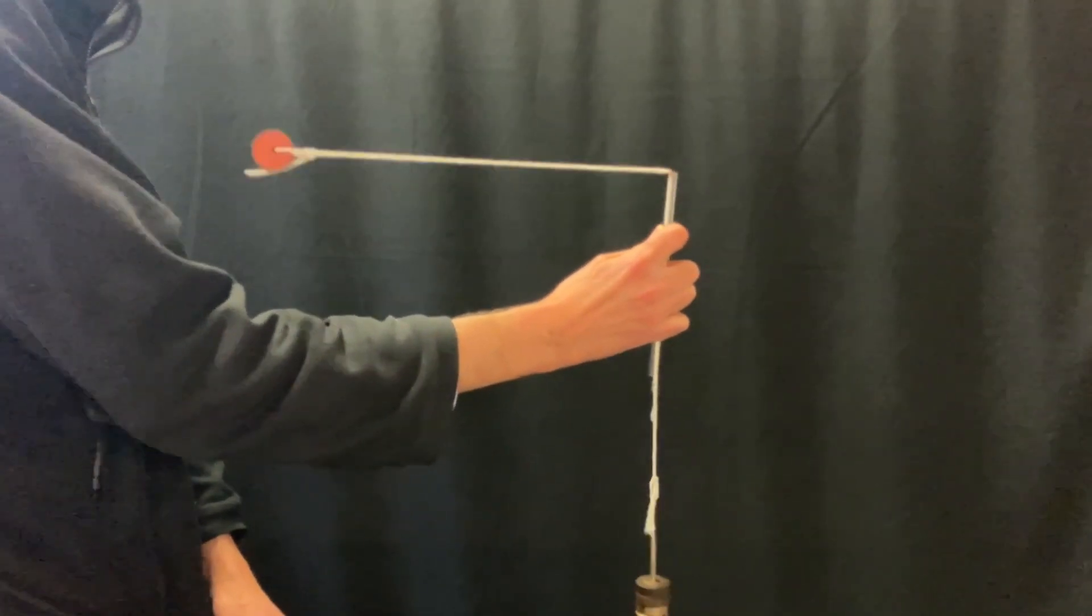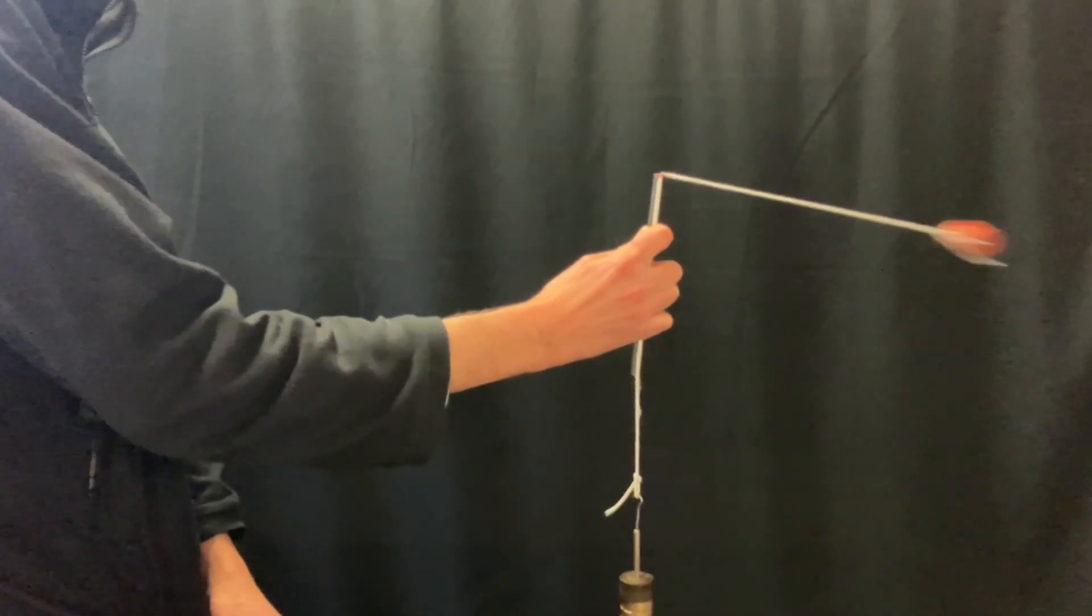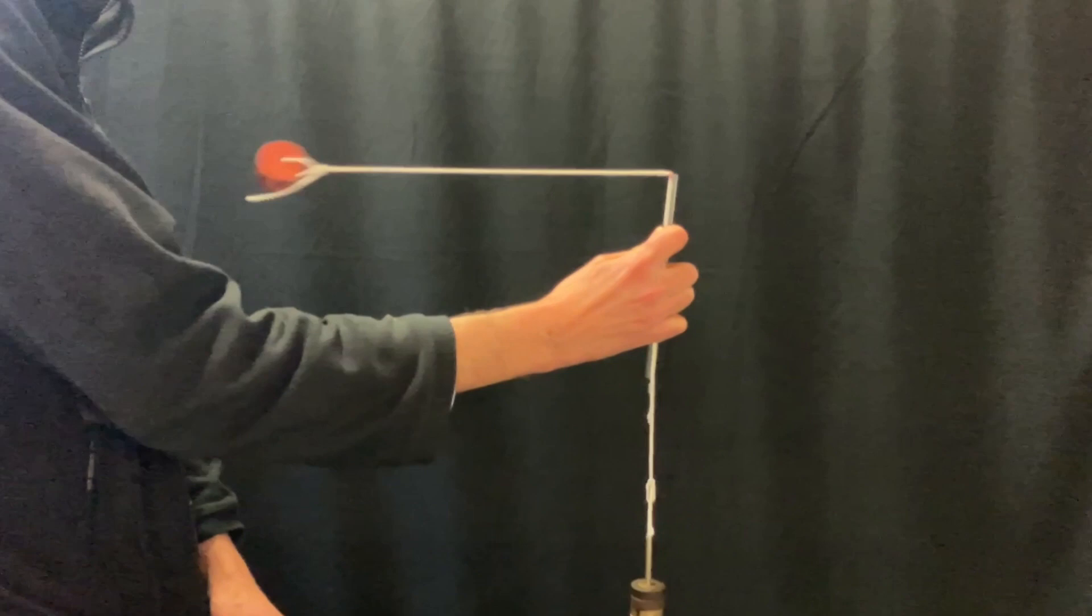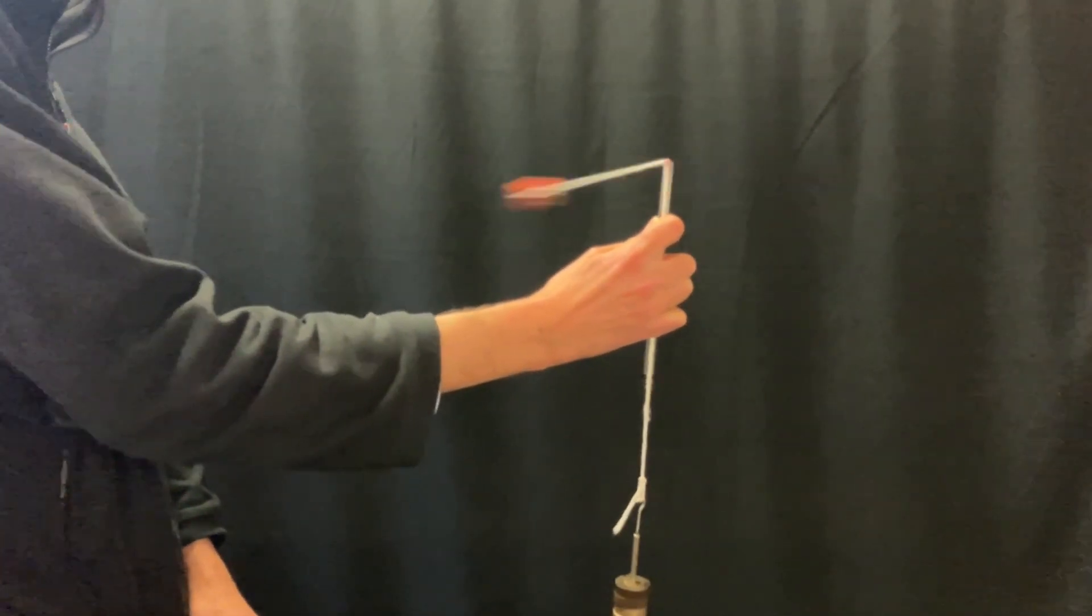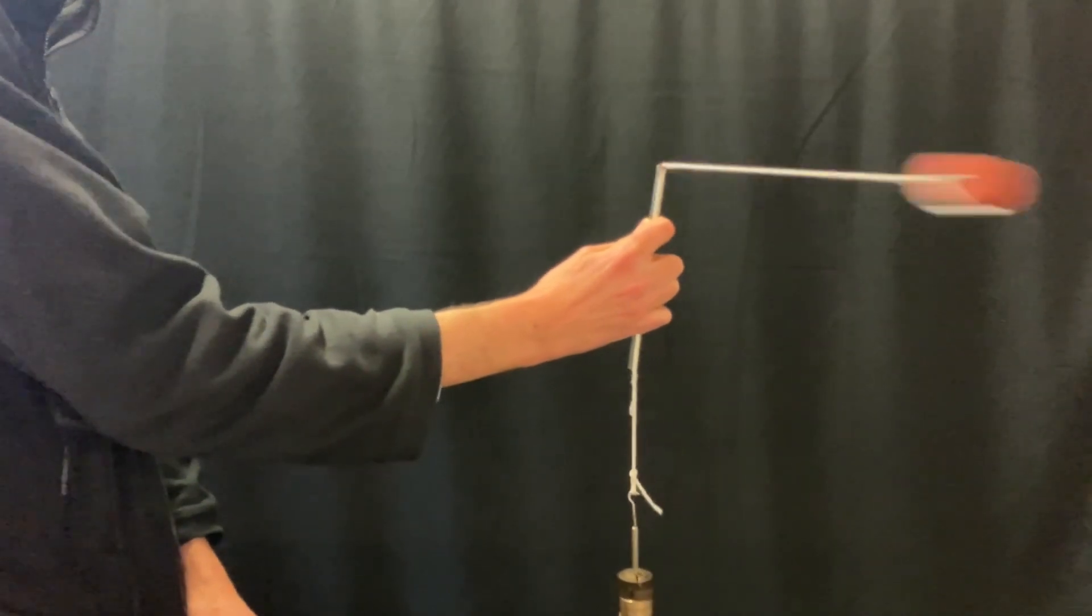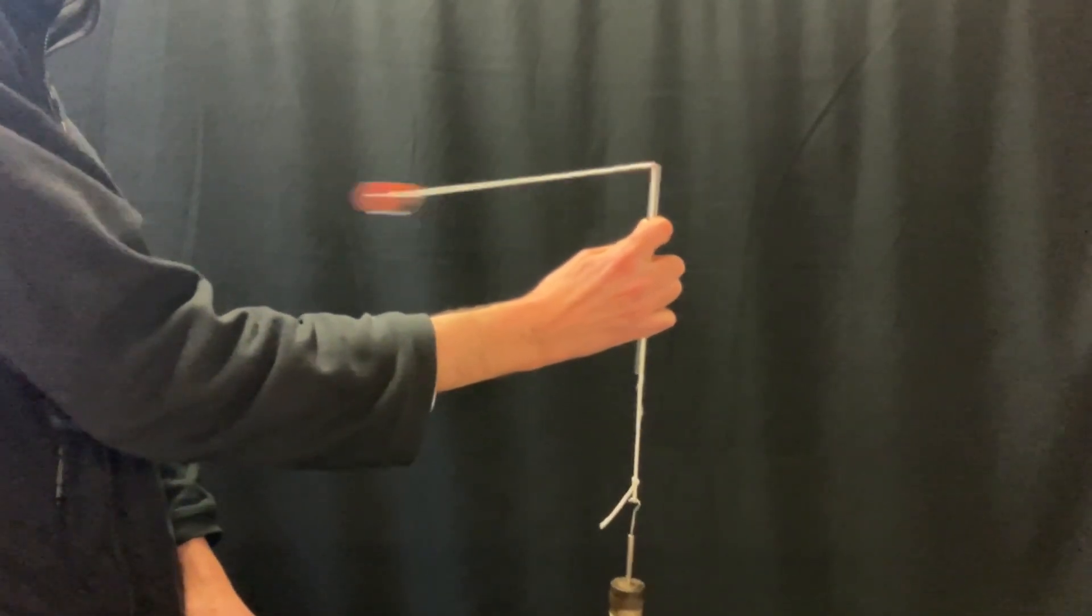You can change the amount of mass on the end and see how that affects the time period for twirling it round in stable circular motion. Let's pause the video and derive the expected relationship.